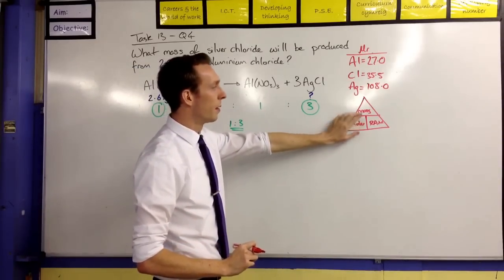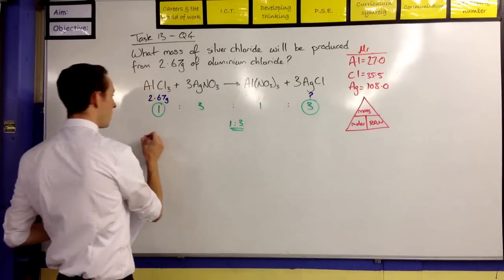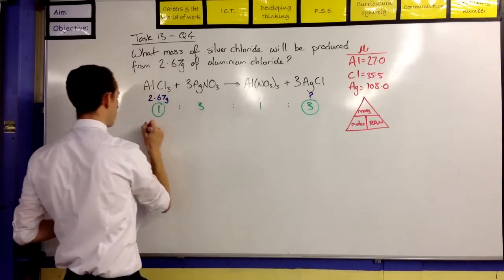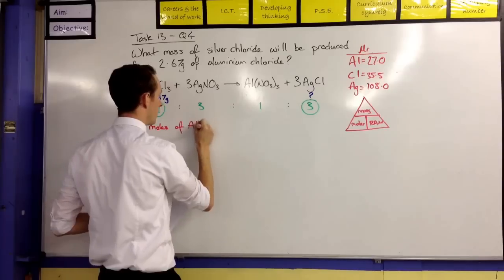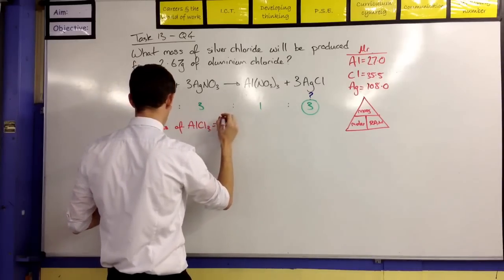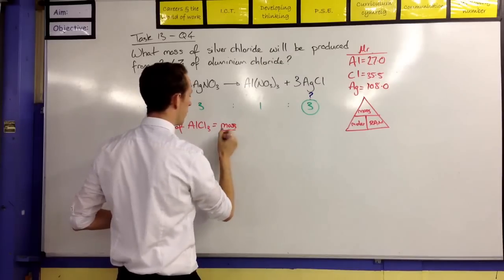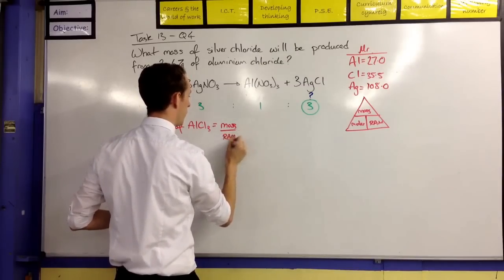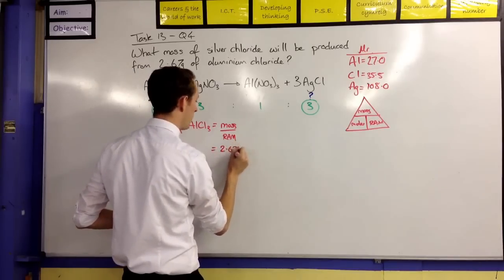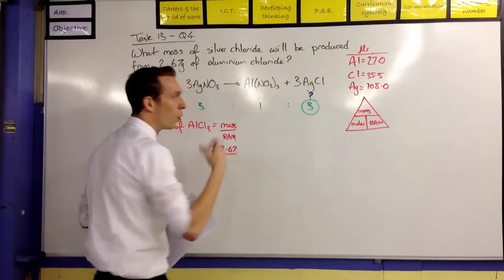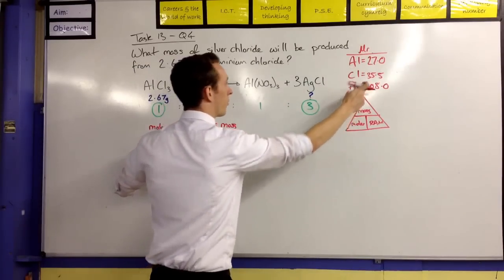So the moles of this are going to be the mass divided by the relative atomic mass. So, let's go to that. Moles of aluminium chloride is going to be equal to the mass divided by the relative atomic mass. We know that the mass is 2.67 grams that we're working with.